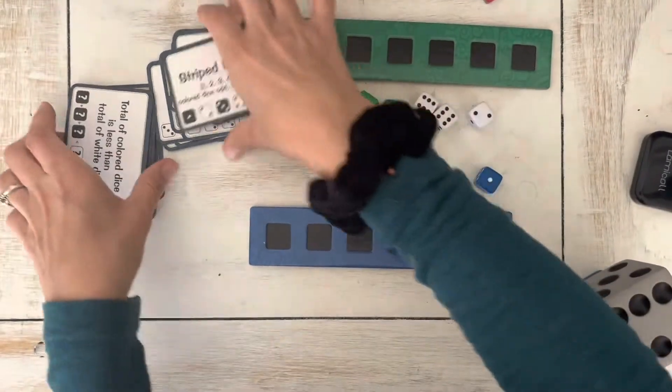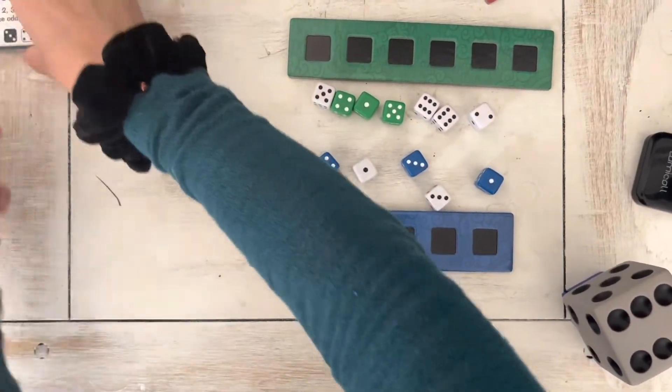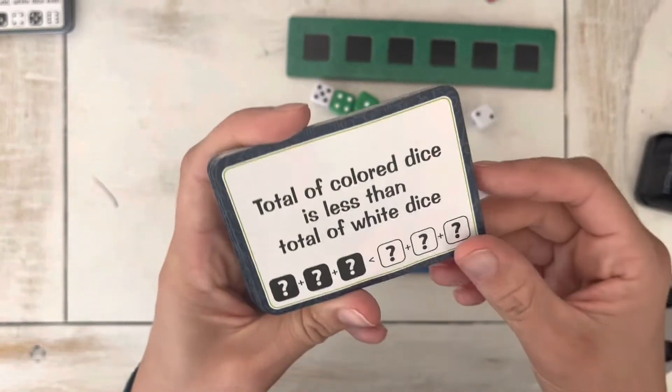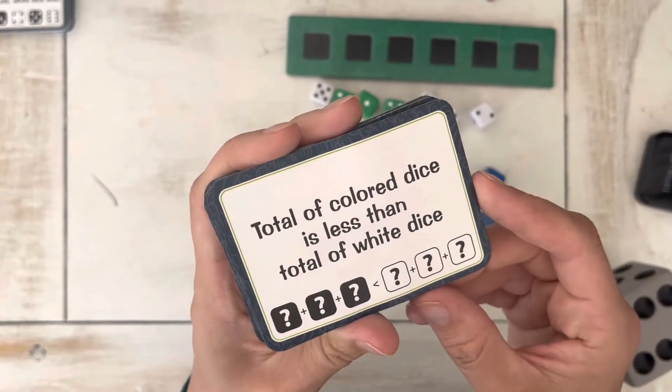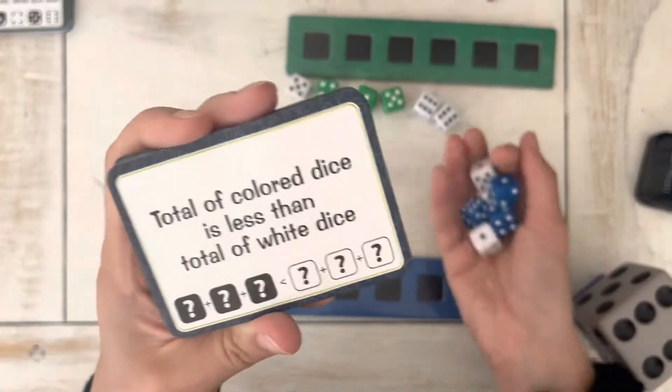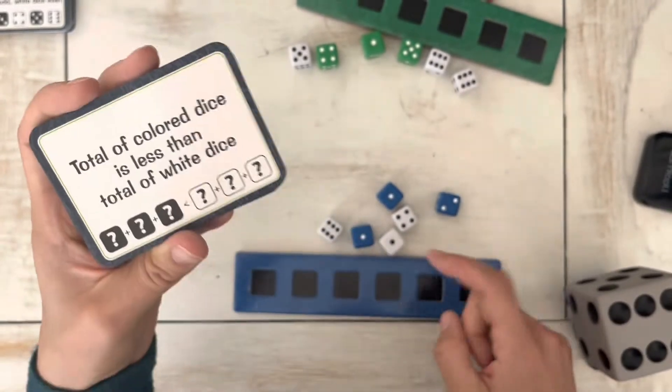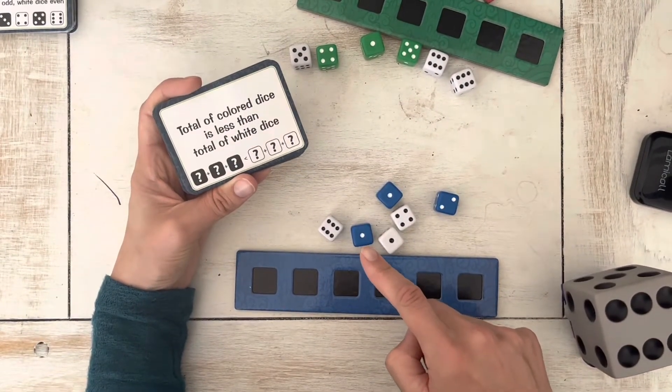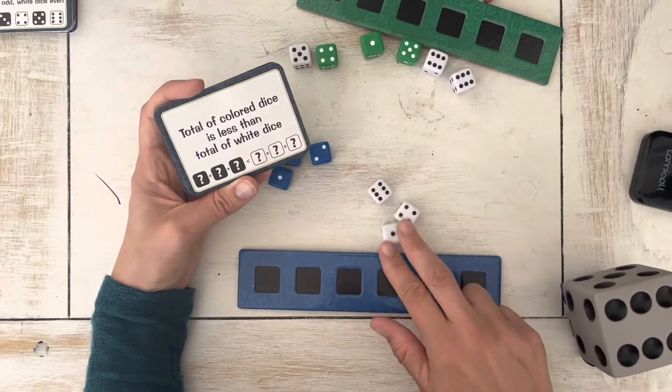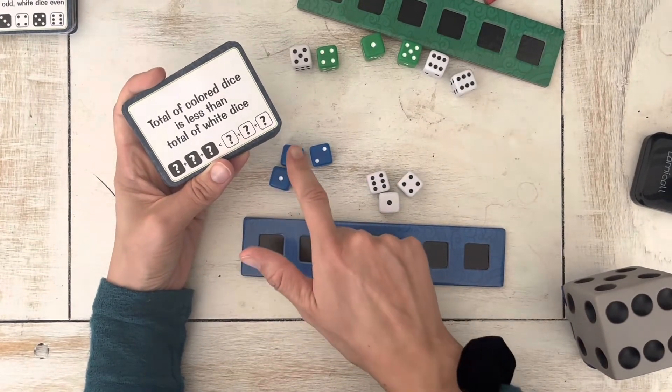And then let me show you some of the harder cards and why I love this game for our homeschool with my bigger kids too. Okay, so for the harder cards, total of the colored dice is less than the total of the white dice. This one is a little trickier. So that can be a lot of different combinations. And so I'm looking down here at my dice thinking, okay.